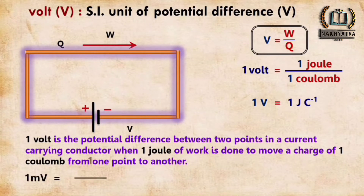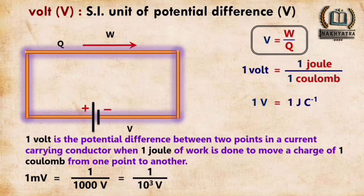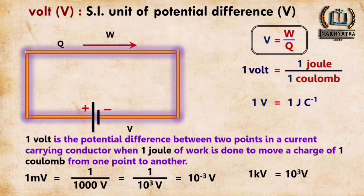For one millivolt: 1 mV = 1/1000 volt = 10⁻³ volt. For one kilovolt: 1 kV = 10³ volt.